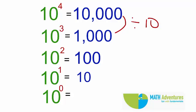That is, 10 to the power of 4 divided by 10 gives me 10 cubed. Again, 1000 divided by 10 gives me 100. So, 10 cubed divided by 10 gives me 10 squared.